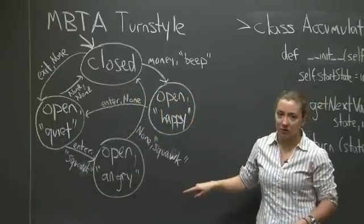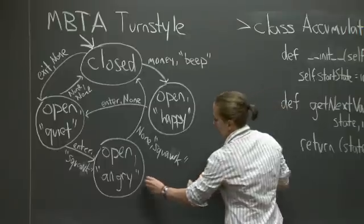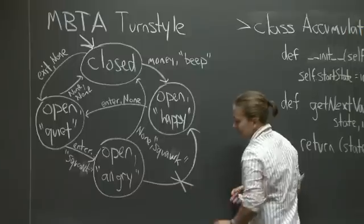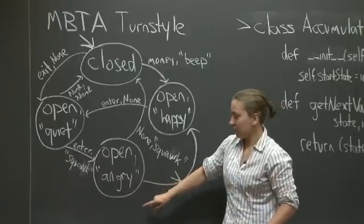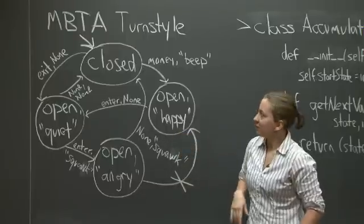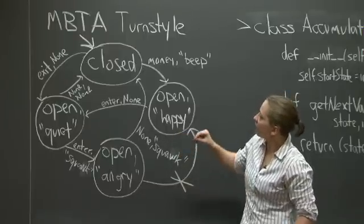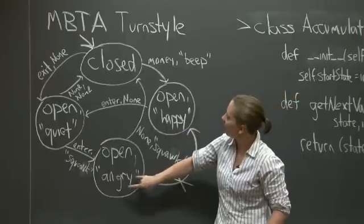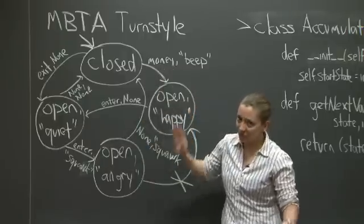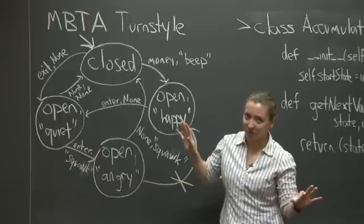Any transition that's not specified is not considered in the function, right? This was not part of our original drawing. So if I was fed open-angry, there would be no way to get to open-happy. Likewise, if I was in open-angry and fed money, for this simple system, we're going to say nothing would happen.